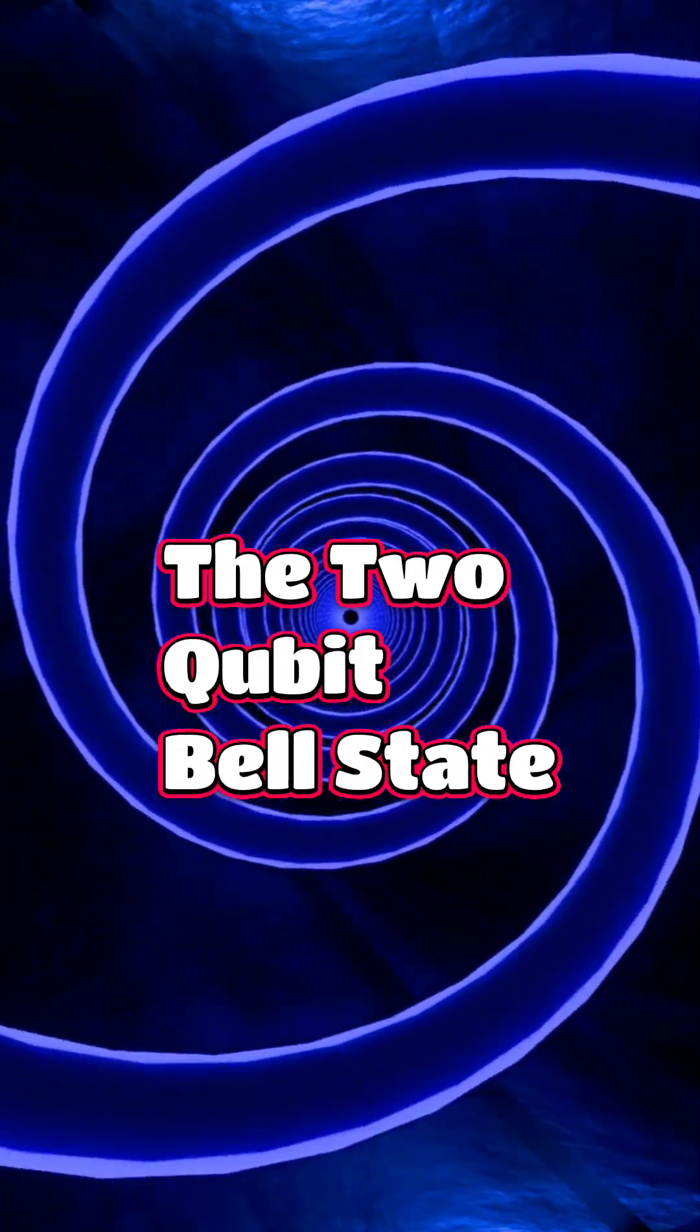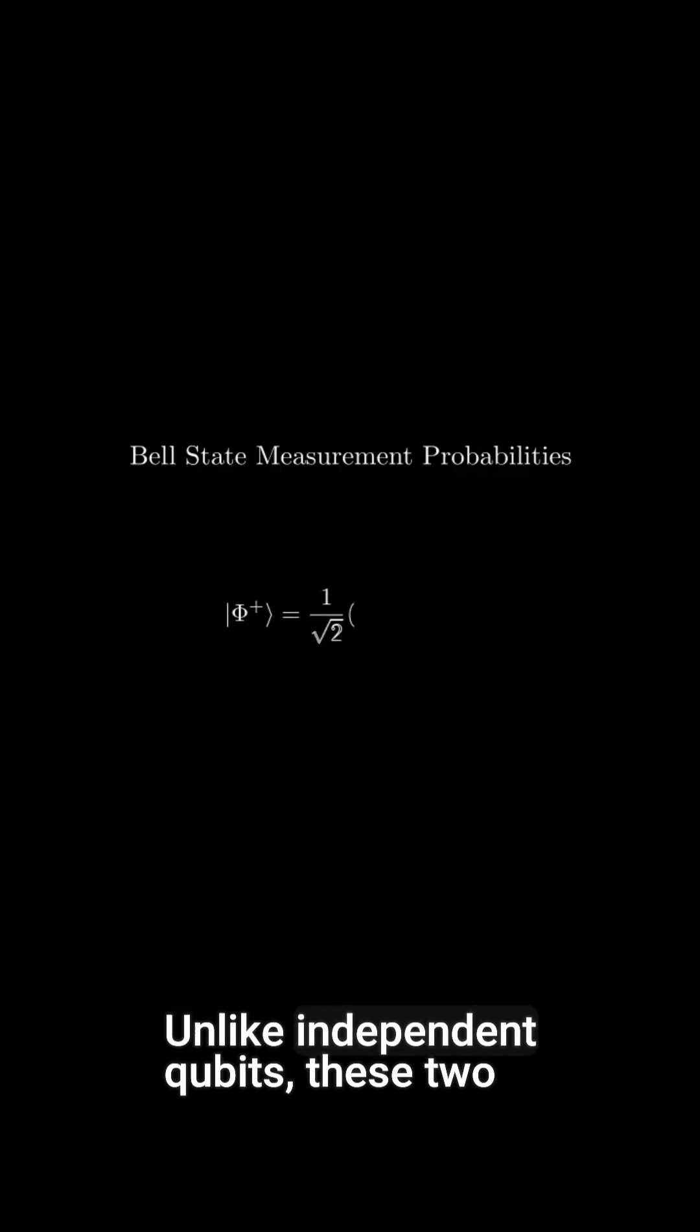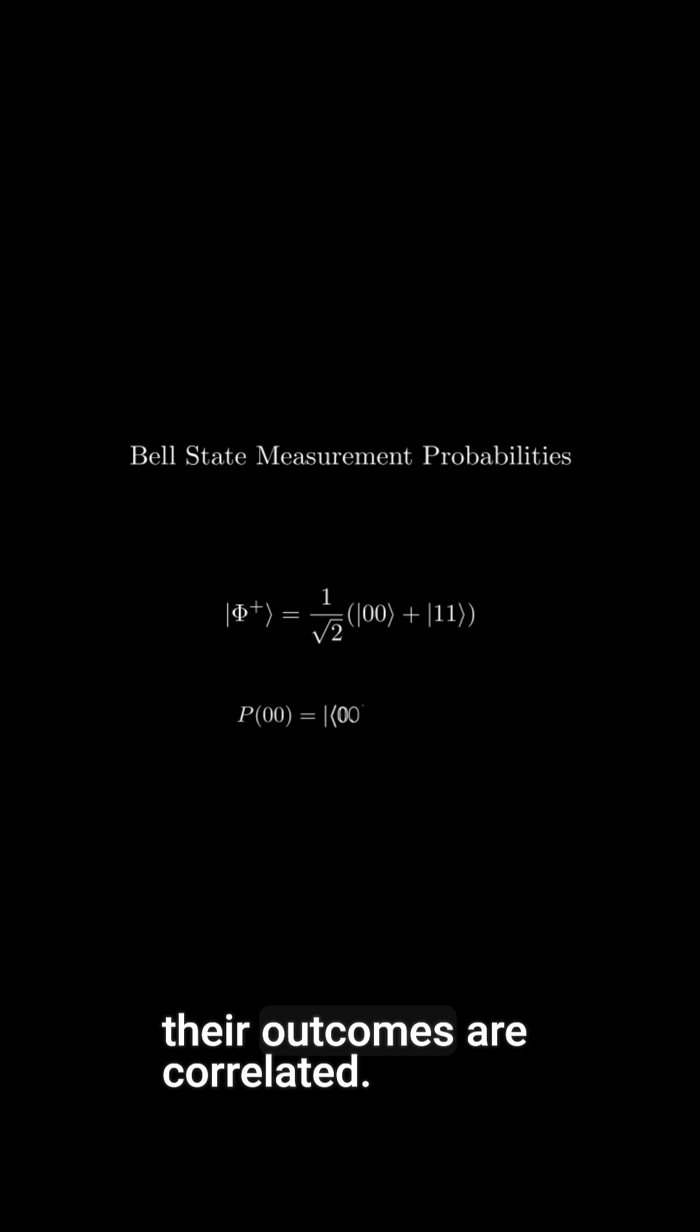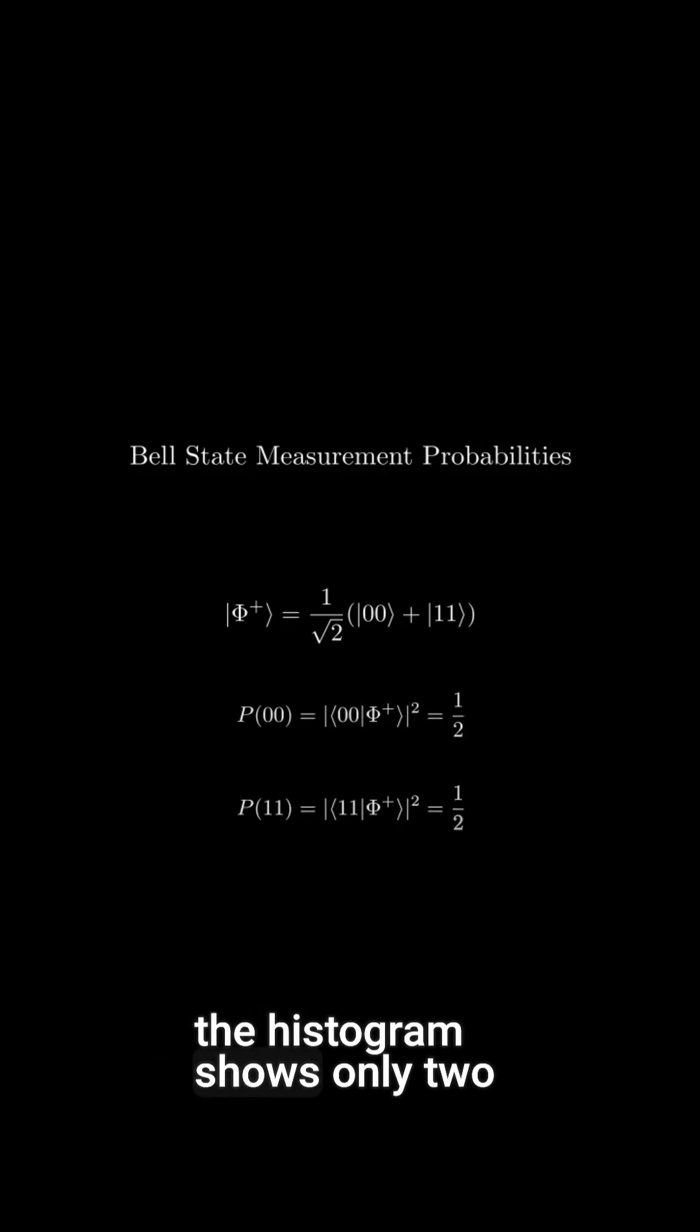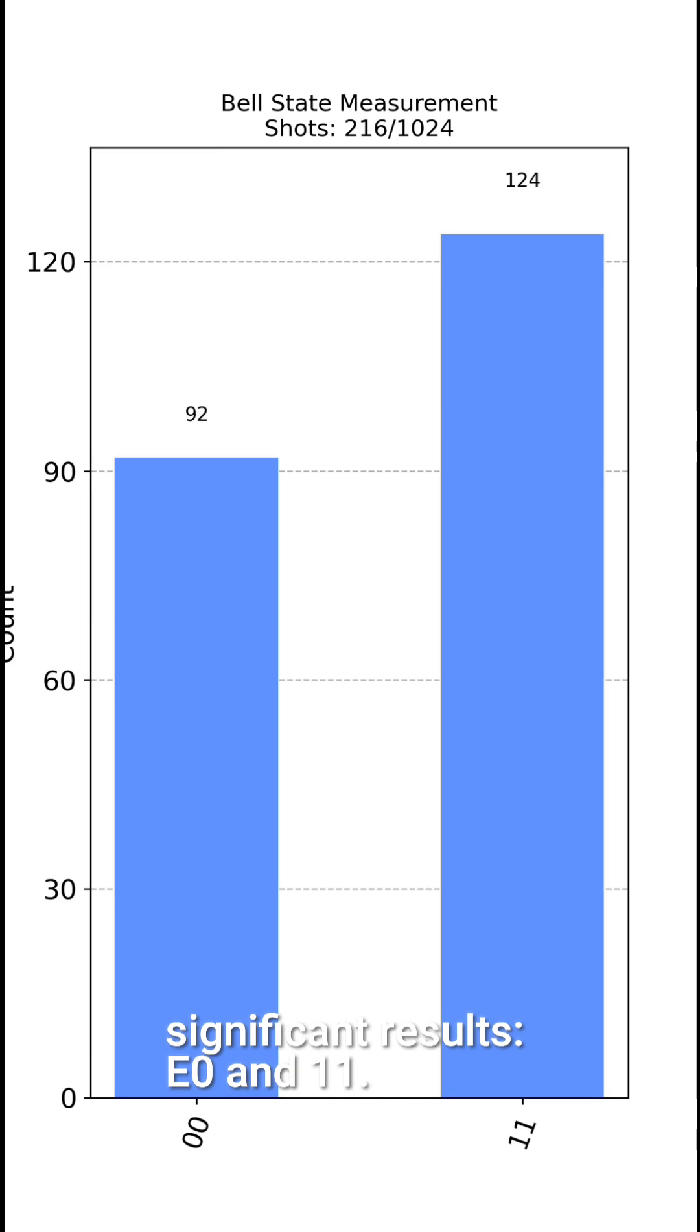Finally, we measure the two-qubit Bell state. Unlike independent qubits, these two are entangled. Their outcomes are correlated. As we perform repeated measurements, the histogram shows only two significant results, 00 and 11.